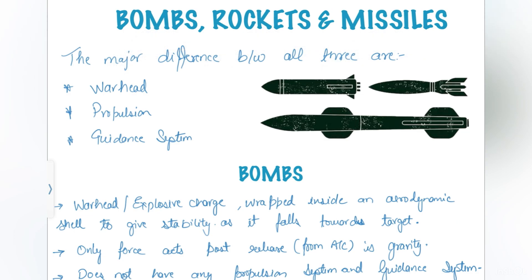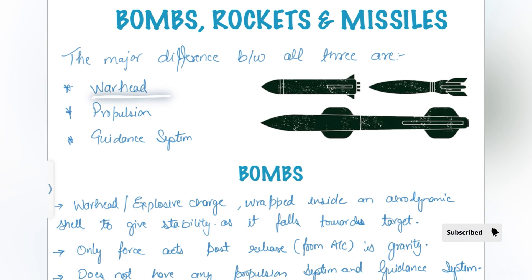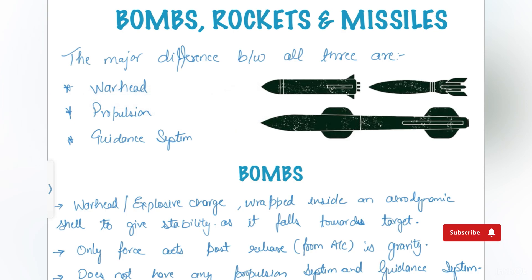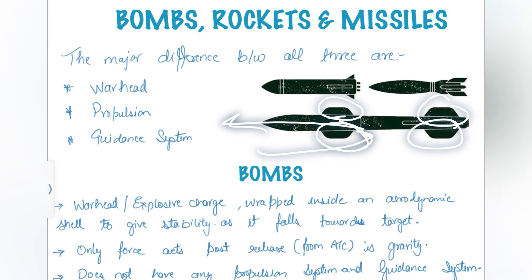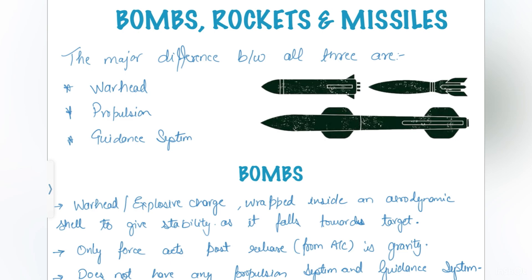These three projectiles can be differentiated with three major components which are fitted in either of them or all three of them. First is the warhead, which is the explosive present in the projectile. Second is propulsion — the system which takes the warhead from point A to point B, where point A is the source and point B is the target. Third is the guidance system, which steers the projectile so it can hit the target with higher probability.